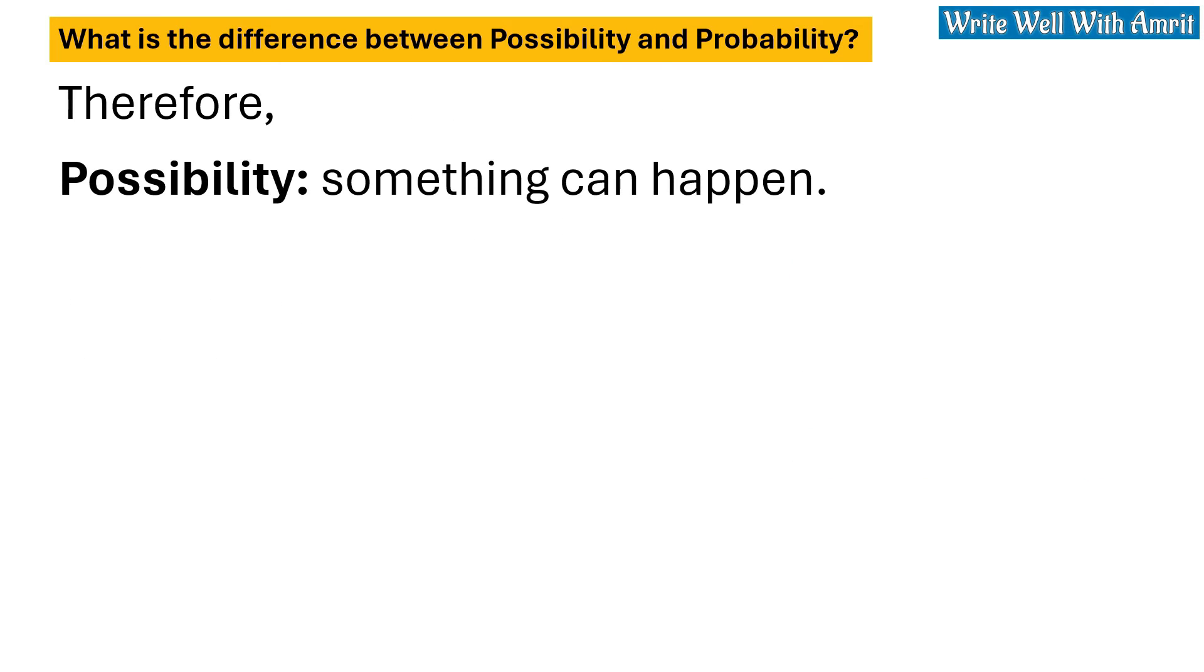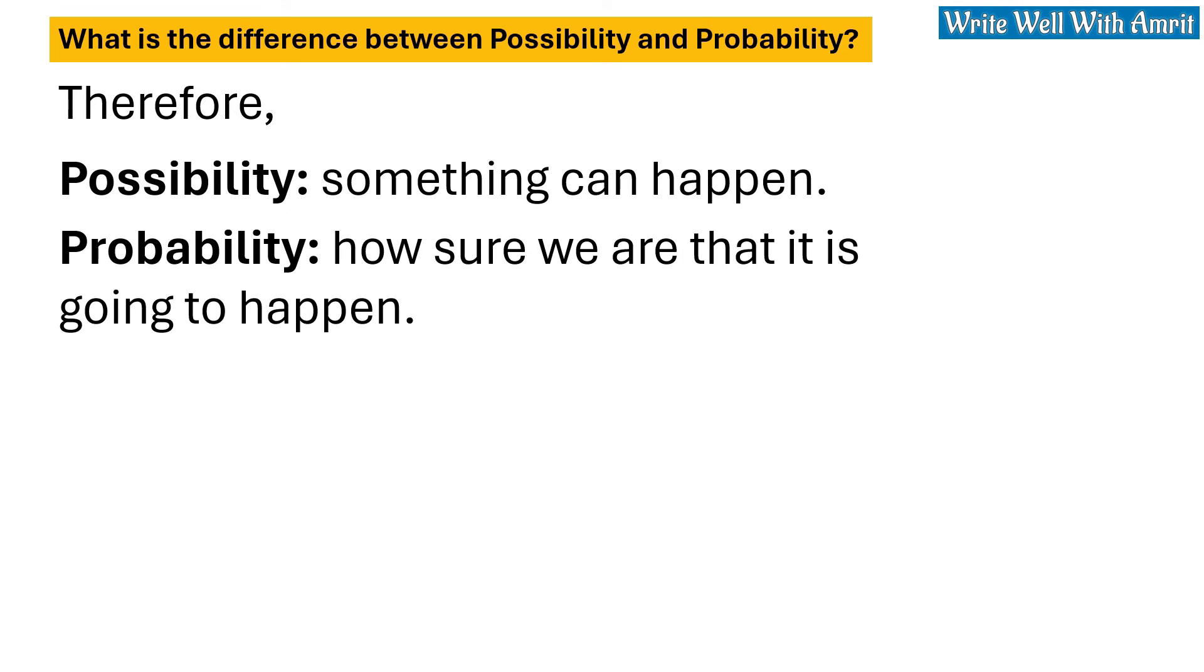Therefore, possibility: something can happen. Probability: how sure we are that it is going to happen.